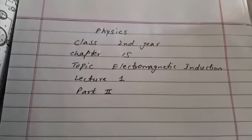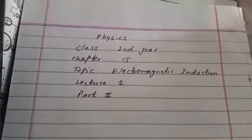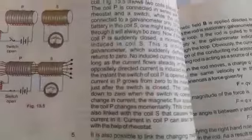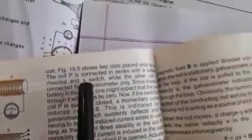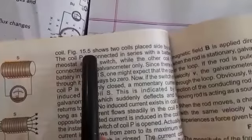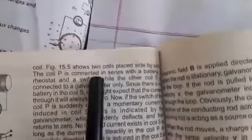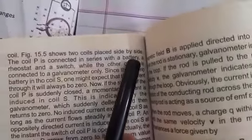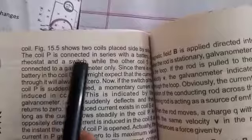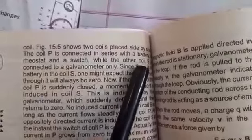Electromagnetic induction part 2, lecture 1. Figure 15.5 shows two coils placed side by side. The coil P is connected in series with a battery.